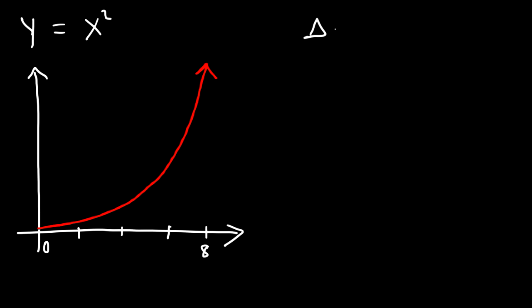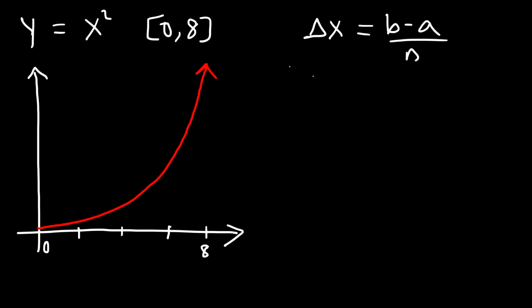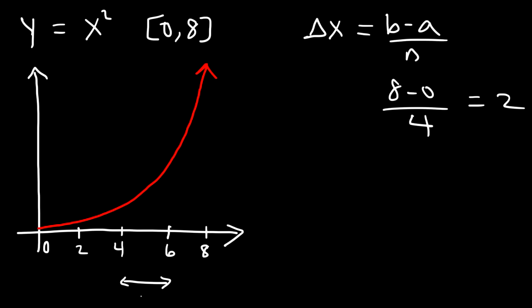To calculate the length of each subinterval, we use the formula delta x equals b minus a divided by n. We want the area over the closed interval from 0 to 8, so a is 0 and b is 8. So 8 minus 0 divided by 4 is 2 — the length of each subinterval, delta x, is 2.